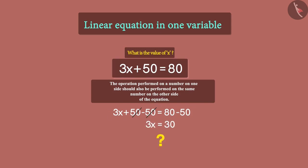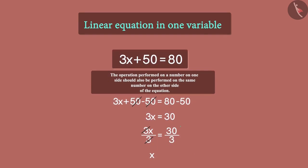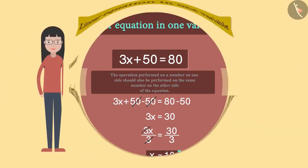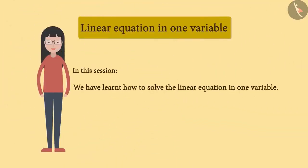So what should our next step be? We need to get rid of this 3. As 3 is being multiplied by x, we can get rid of 3 by dividing the term by 3. But then, we have to divide by 3 on the right-hand side also. Now 3 and 3 cancel each other on the left, and on the right-hand side, we can divide 30 by 3 to get 10. So ultimately, we get the value of x as 10. In this session, we have learnt how to solve the linear equation with one variable. In the next video, we will look at some more examples.